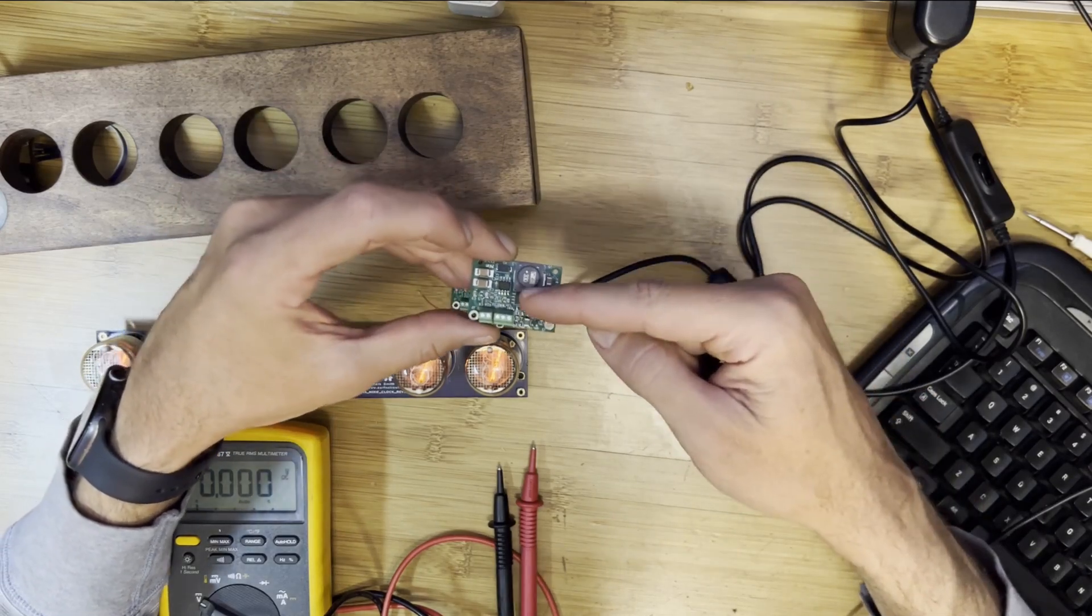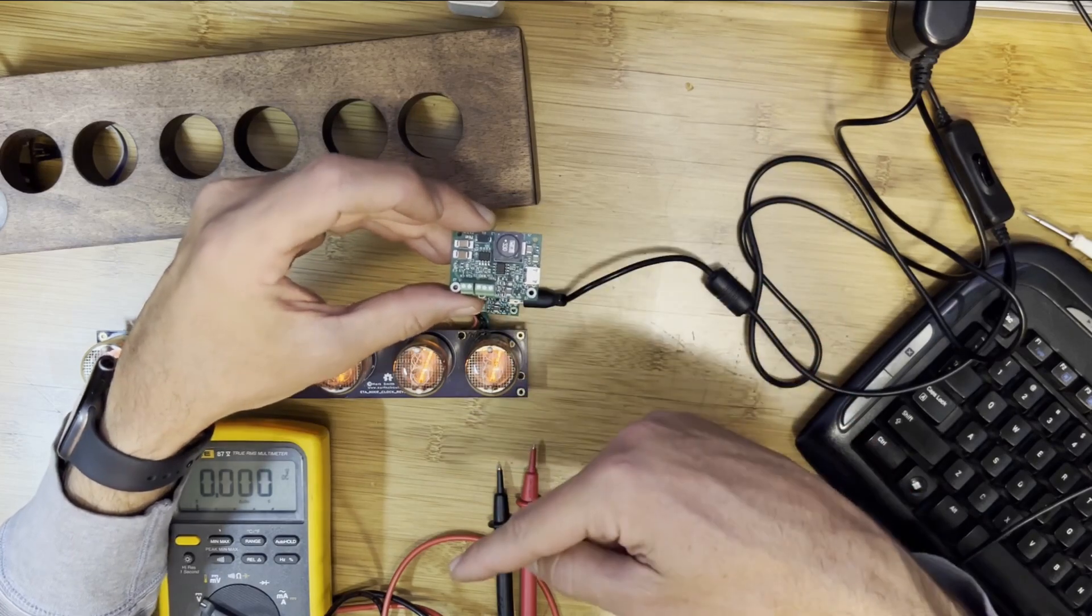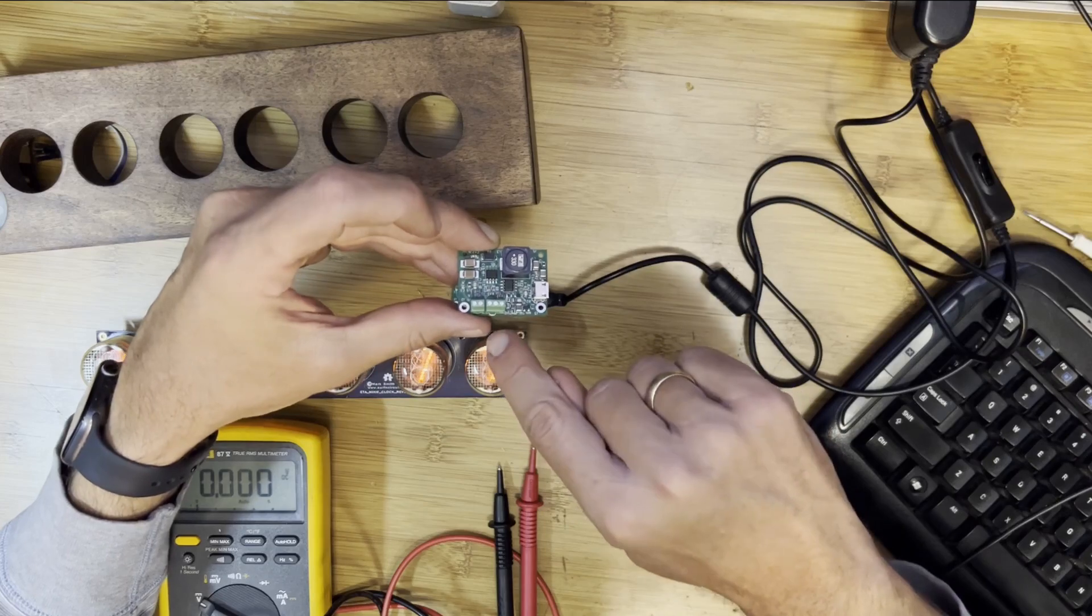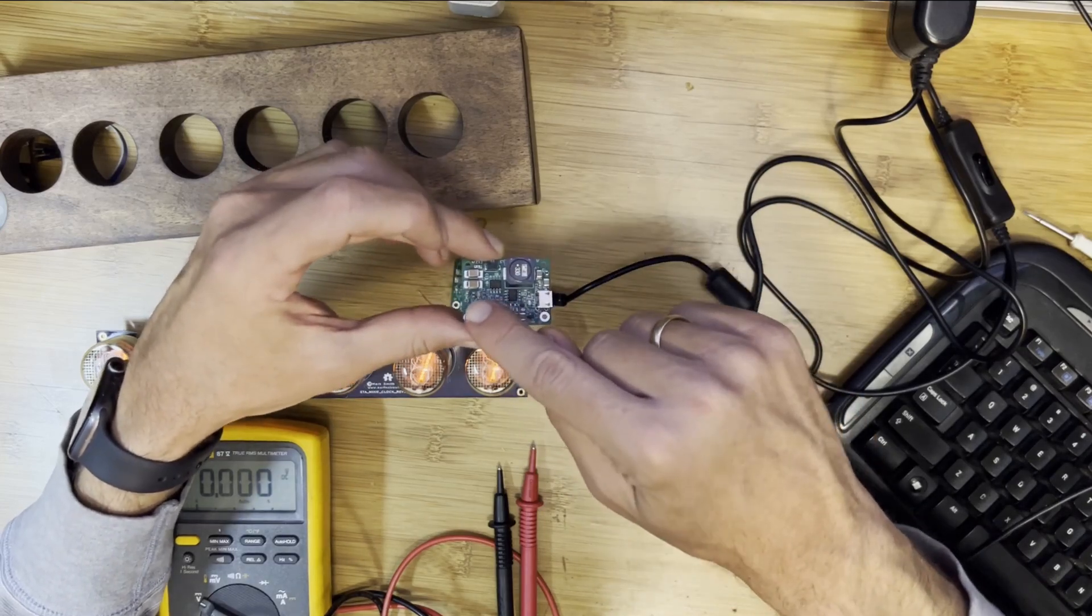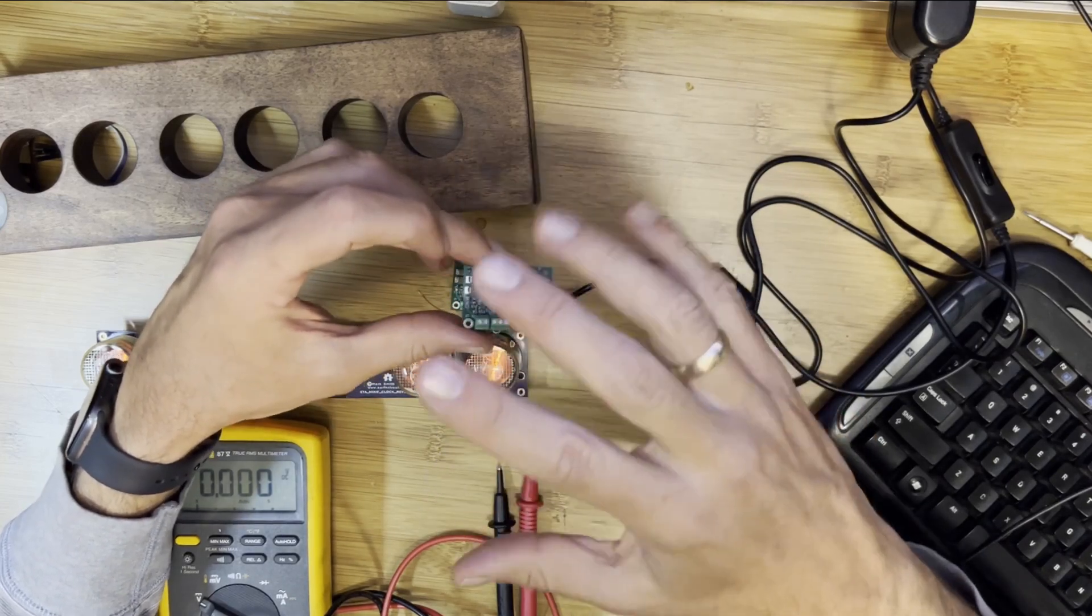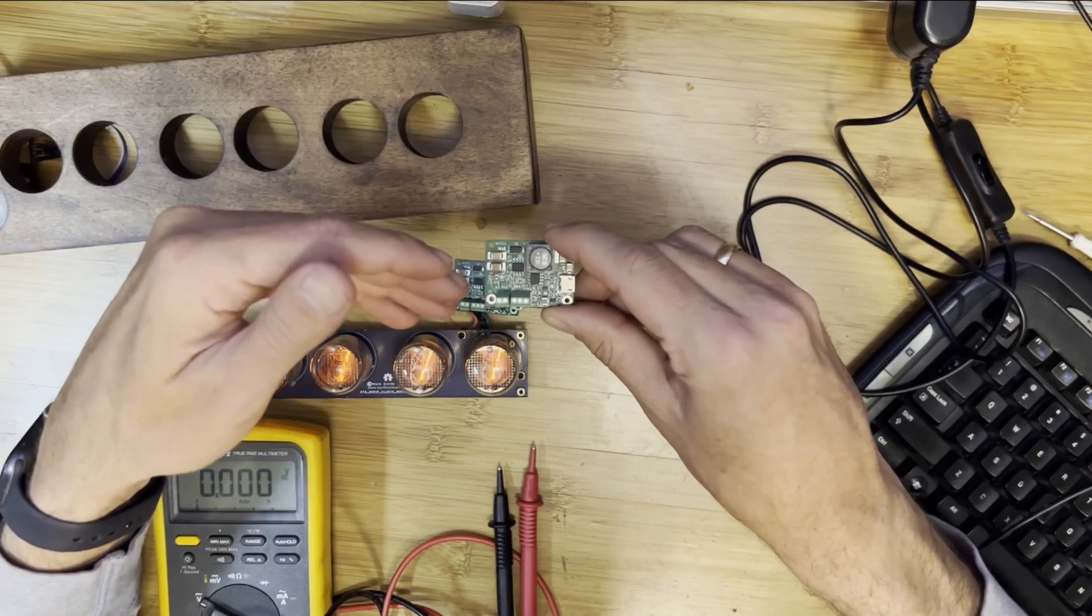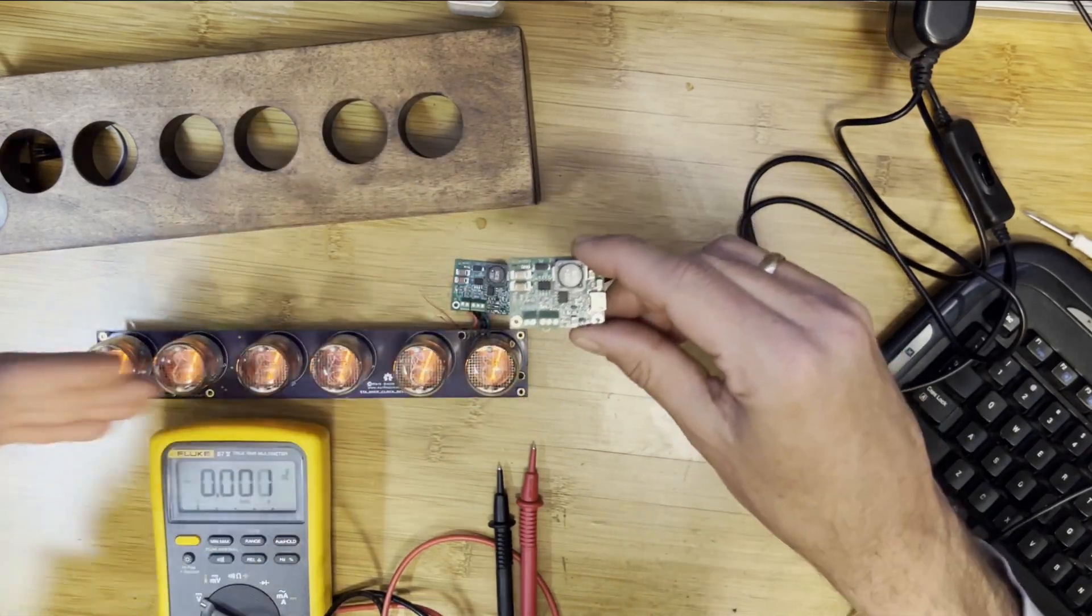And then there's a 5-volt pass-through that can go to external circuitry. And then when the N enable pin gets pulled low, it will also output 165 volts. That's the nominal output voltage.